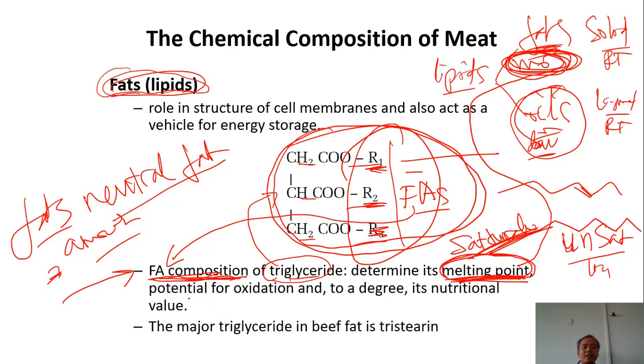And second reason why fatty acids is important. Because it determines the potential for oxidation, the capacity that the fat will get oxidized. The lipids will get oxidized. Which one has higher potential to be oxidized? The saturated or the unsaturated? Unsaturated. Unsaturated fatty acids are not stable and more sensitive to oxidation. Sensitive là nhạy, dễ bị. Sensitive to oxidation or prone to oxidation. And fatty acids composition to a degree also determines nutritional value of the fat, of the lipids.